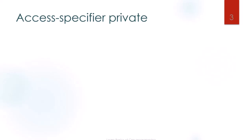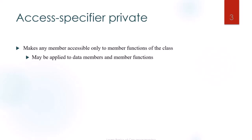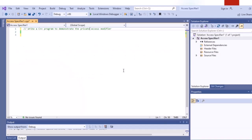The first access specifier is private. It makes any member accessible only to the member functions of the class, restricting use of class members within the class. It may be applied to data members and member functions. Data members are normally declared as private, which encourages information hiding. Let us write a C++ program to demonstrate the private access modifier. We will first try to access the private data member directly with the dot operator and check what output we get.